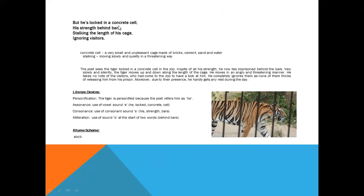Concrete cell means a very small, unpleasant cage made of bricks, cement, sand, and water. His strength, his power is behind the bars. And he is stalking the length of his cage. Stalking, I told you earlier, moving slowly and quietly in a threatening way. The poet sees the tiger locked in a concrete cell in the zoo. In spite of all his strength, he now lies in prison behind the bars. Very slowly and silently, the tiger moves up and down along the length of his cage. He moves in an angry and threatening manner. He takes no note of the visitors. He completely ignores them as none of them thinks of releasing him from his prison. Moreover, due to their presence, he hardly gets any rest during the day.